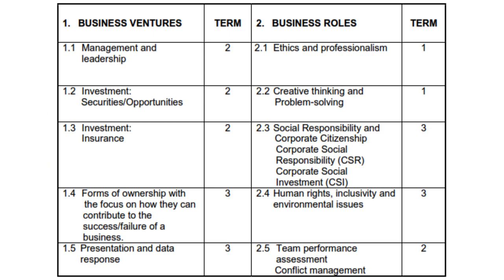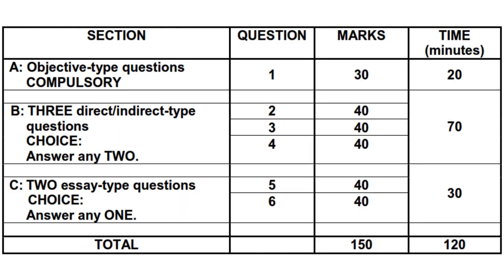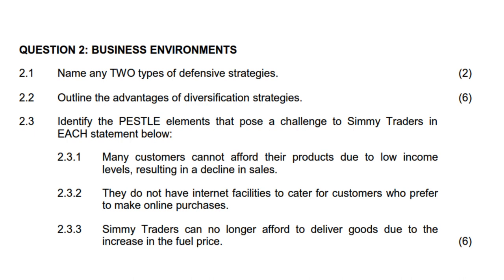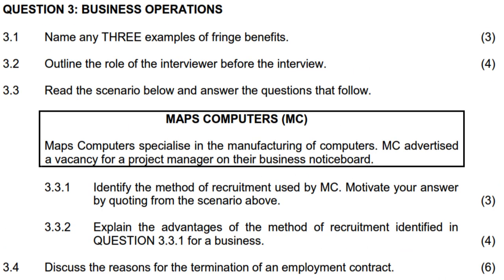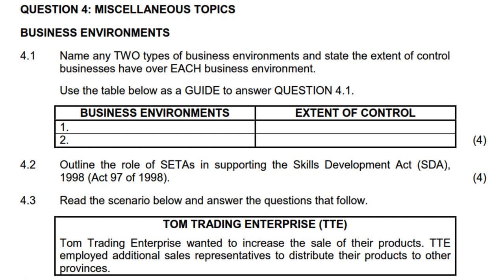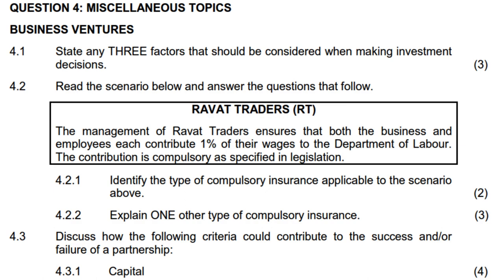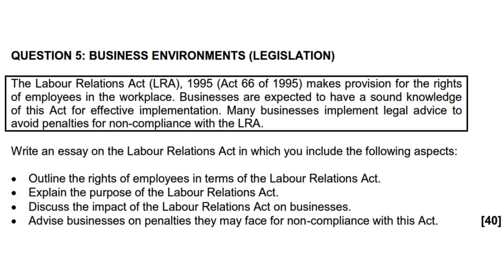In that case your preferred questions in the exam will be as follows. Question 1 is compulsory. In section B, the instruction says answer any two of the three questions — questions 2, 3 and 4. Because of your preferred module, you answer question 2 because all 40 marks come from business environments in paper 1 and business ventures in paper 2. Skip question 3 because you did not fully prepare for business operations or business roles. Answer question 4 because 20 marks — half of the full 40 — is from your preferred module. Lastly in section C, answer only one essay question, so answer question 5 because all 40 marks come from business environments in paper 1 and business ventures in paper 2.